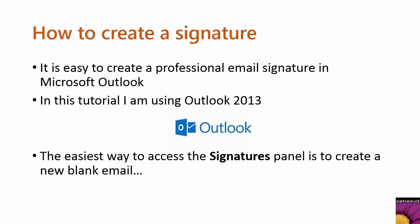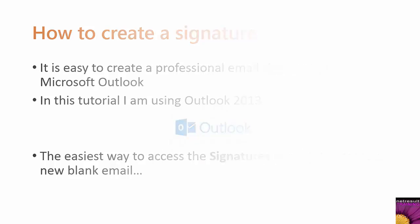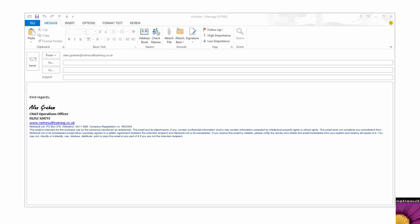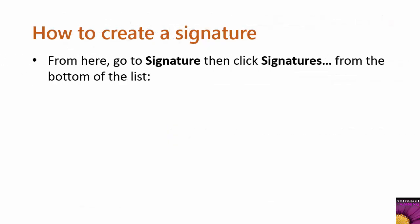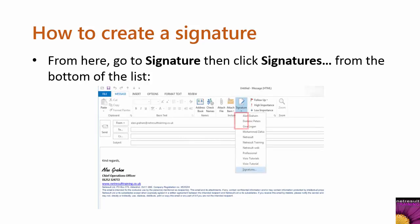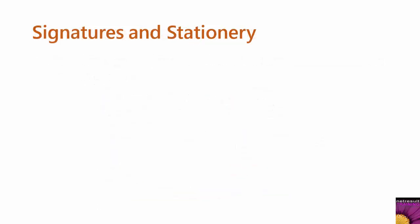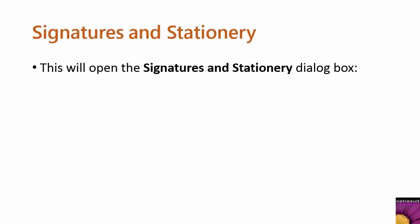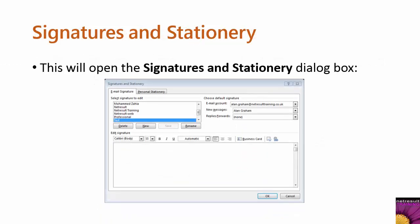My favorite is to create a new blank email by going to New and then Mail, and then to create the signature you need to go to Signatures, then Signatures at the bottom of the list. That will then open the Signatures and Stationery dialog box, and from there you need to click New.